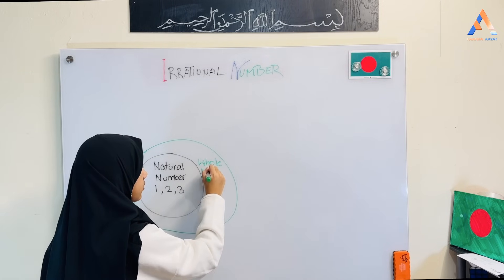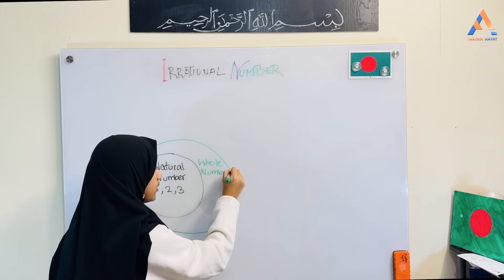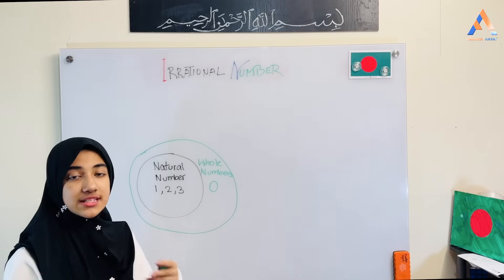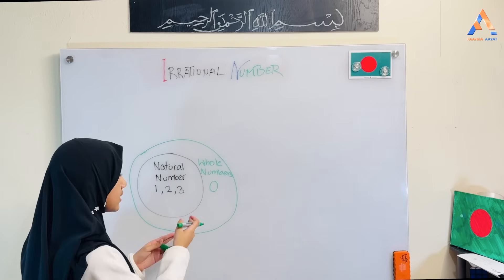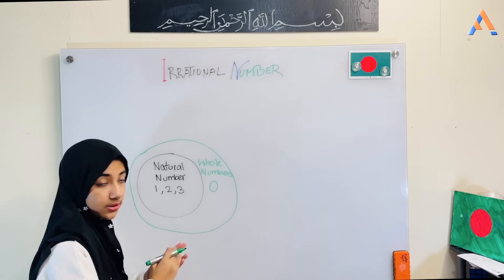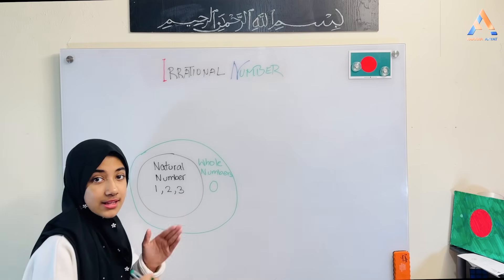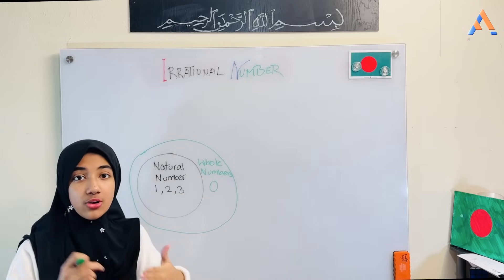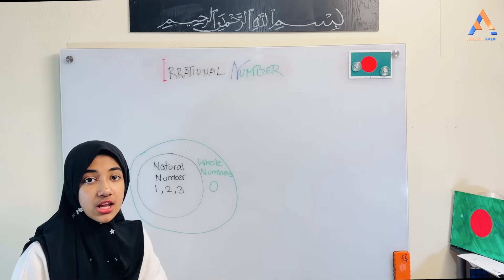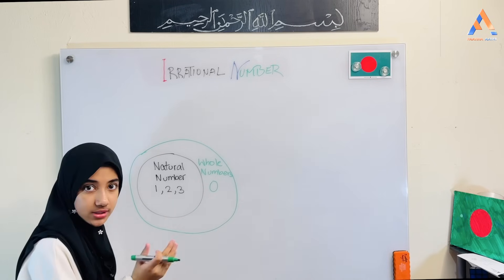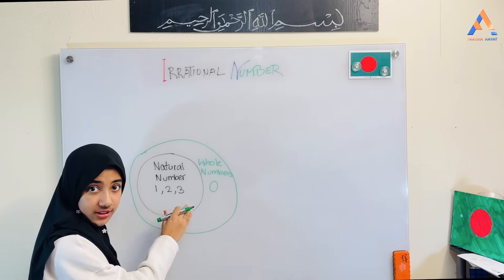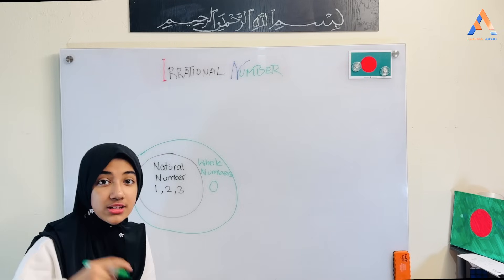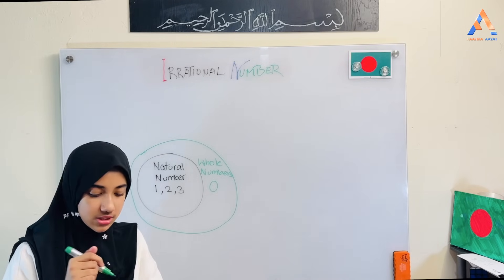Whole numbers. For example: 0, 1, 2, and 3. If you remember the whole number circle, it contains a circle inside it. That means whole numbers include not only 0, but also natural numbers: 1, 2, and 3. So natural numbers are 1, 2, 3, and whole numbers are 0, 1, 2, 3, and so on towards the positive direction.